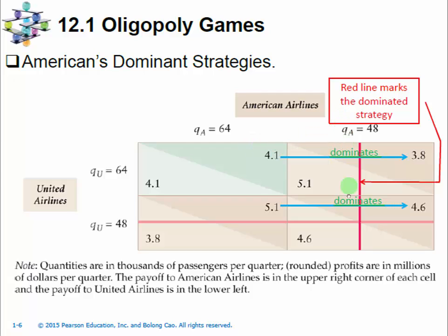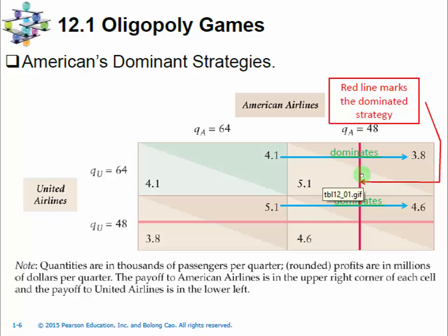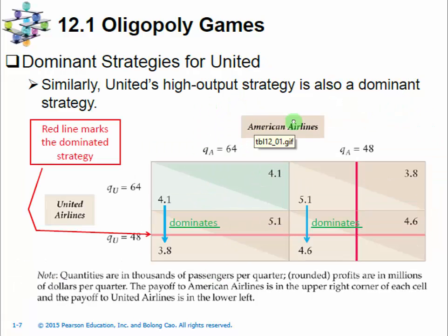A rational player in the game will never play dominated strategies. To demonstrate that the dominated strategy is never played, we use a dark red line to cross it out for American Airlines. Then we know American Airlines will only play the high output strategy. After analyzing American Airlines' strategic reasoning, we now look at the row player, United Airlines, and what United will do.